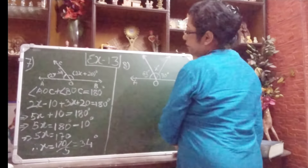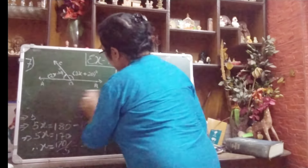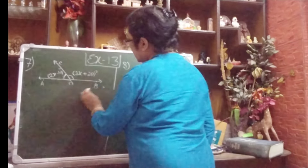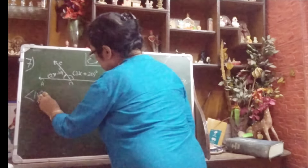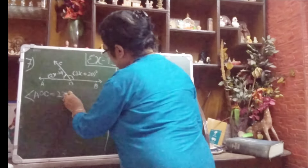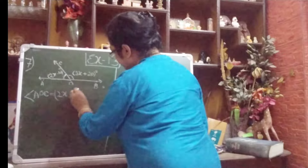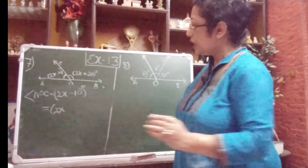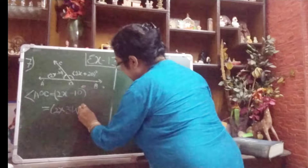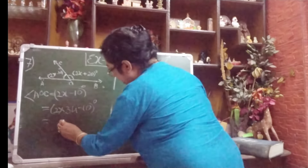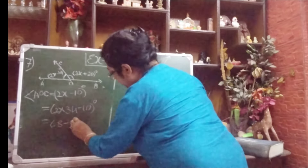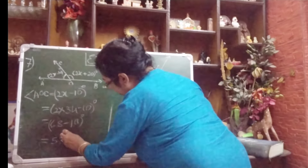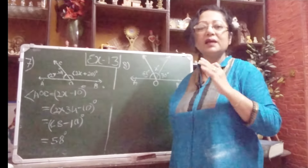Now they said we also have to find angle AOC and angle BOC. So, angle AOC equals 2x minus 10 degrees, which means 2 into 34 minus 10 degrees. 2 times 34 is 68, so 68 minus 10 equals 58 degrees. Therefore, angle AOC equals 58 degrees.